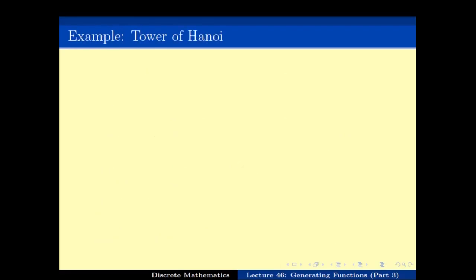Now let us look at the example of today, which is the Tower of Hanoi — our old friend. It says H1 = 1 and H(n) = 2 * H(n-1) + 1. Remember that we did solve this recurrence relation before using the first technique of unfolding the definition. But today we are going to solve it in a different style using generating functions, to see how they can be used for this kind of problem and to understand the generating function machinery better.